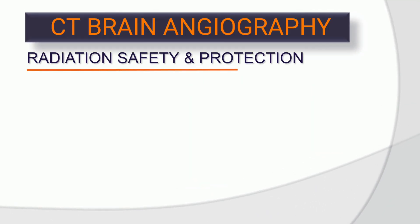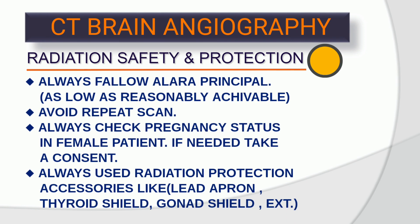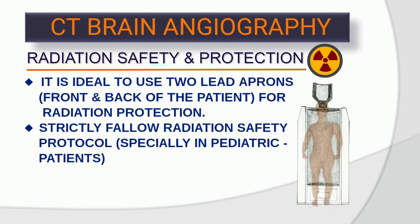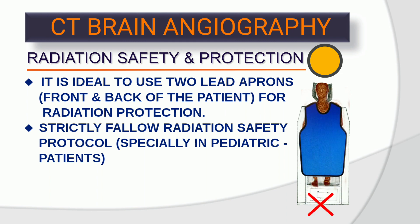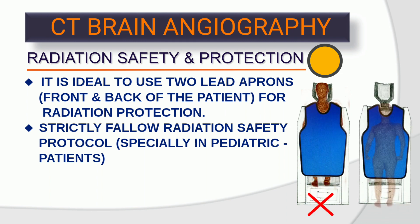Radiation safety and protection: always follow the ALARA principle — as low as reasonably achievable. Avoid repeat scans. Always check pregnancy status in female patients; if needed, take a consent. Always use radiation protection accessories like lead apron, thyroid shield, gonadal shield, etc. It is ideal to use two lead aprons, front and back of the patient. Strictly follow radiation safety protocol, especially in pediatric patients.